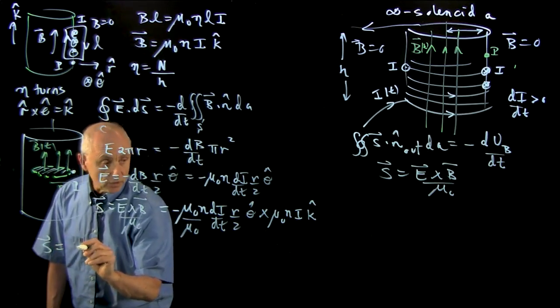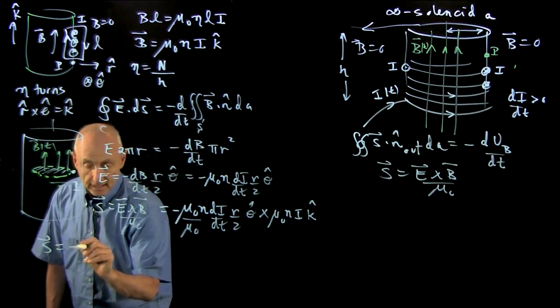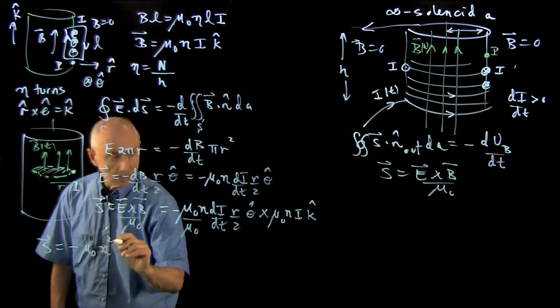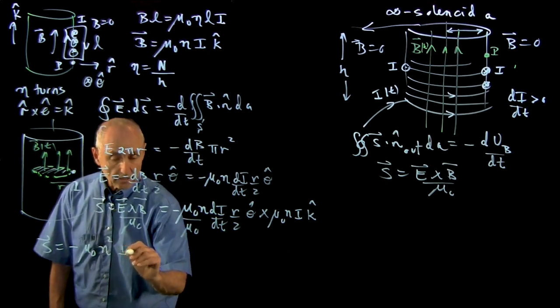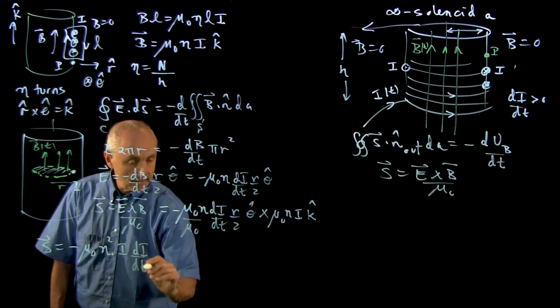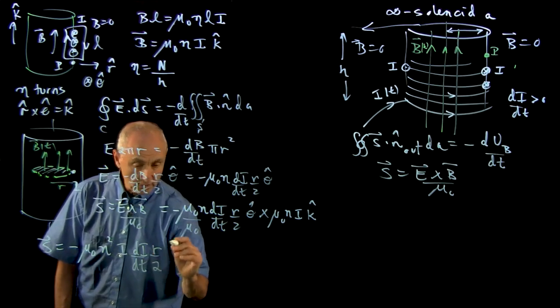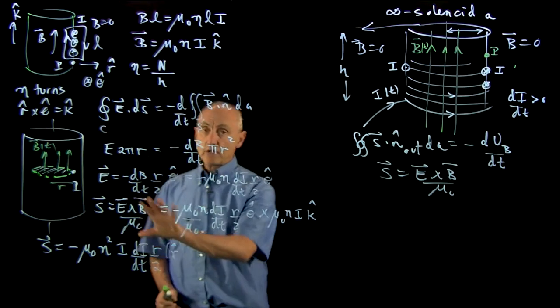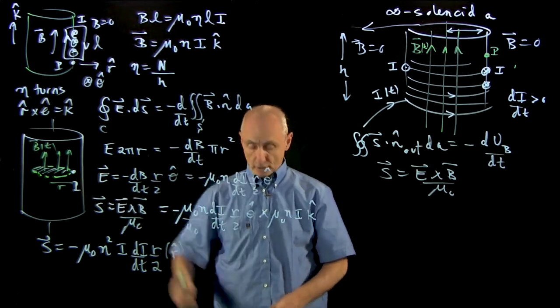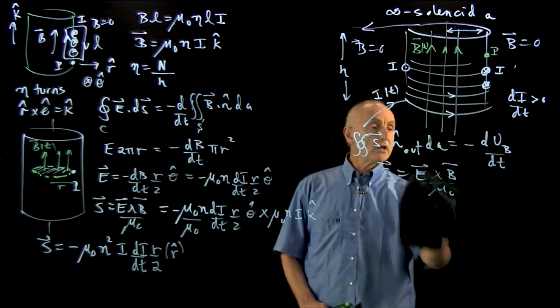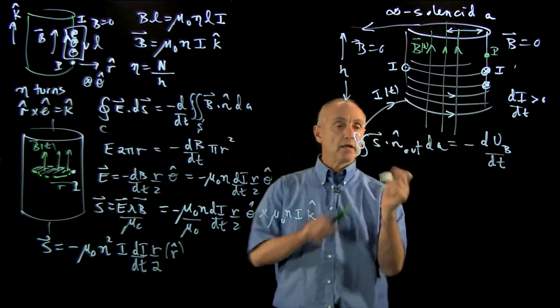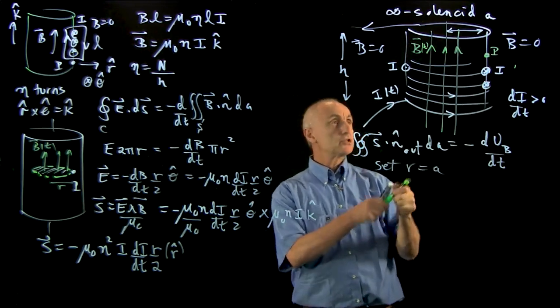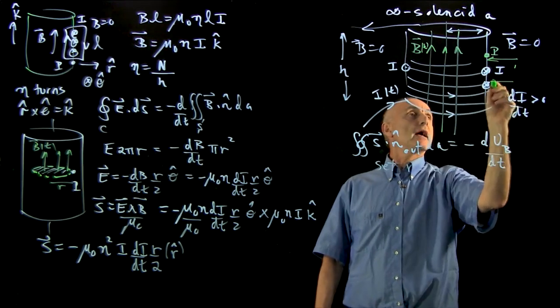We get minus, we have one mu_0, we have two little n squared, we have i di/dt r over 2, and that is in the minus r-hat direction. So there's our calculation of the Poynting vector at an arbitrary point P. But when we want to do this integral, we want to set r equal to the radius of the solenoid. Just to indicate that, our Poynting vector here, S, is pointing in.